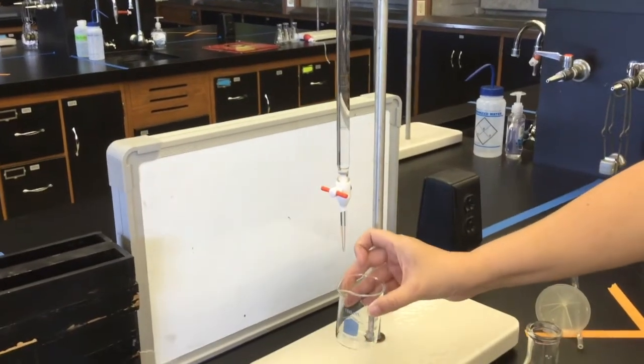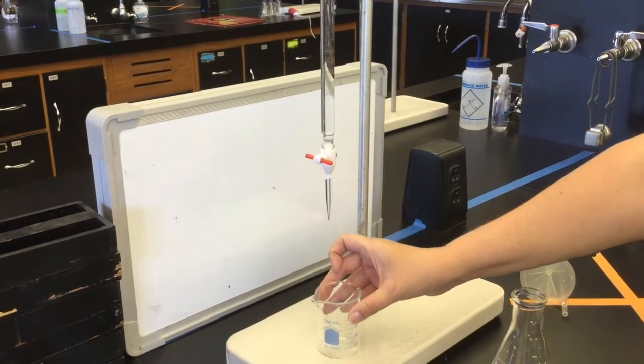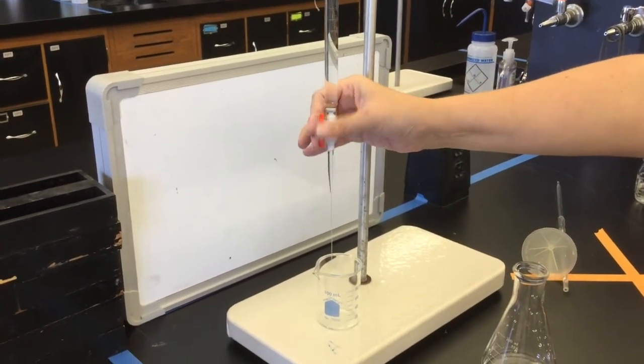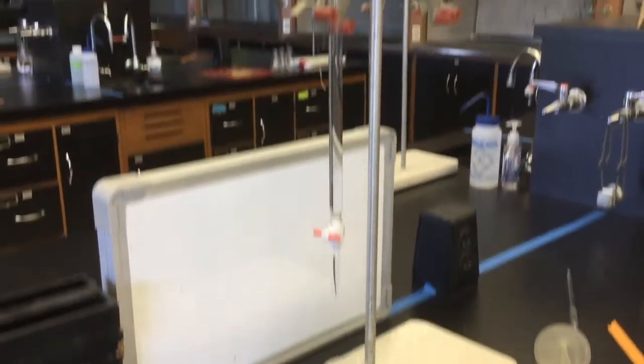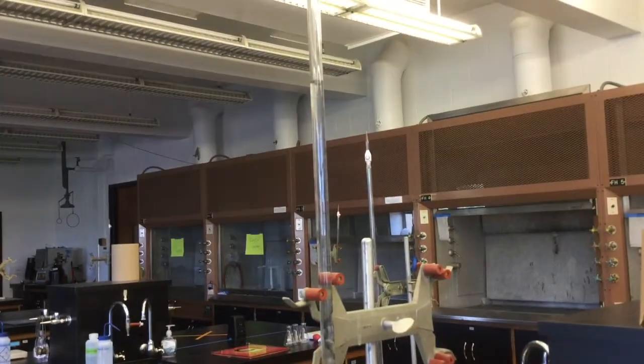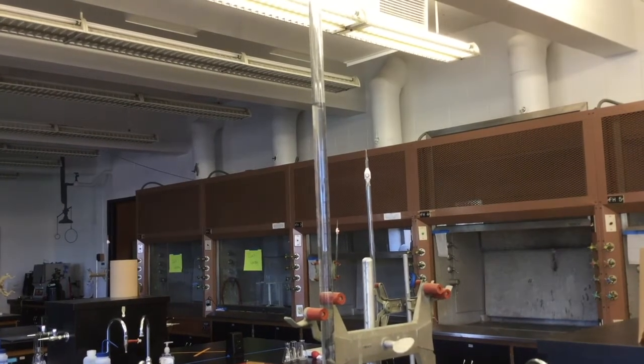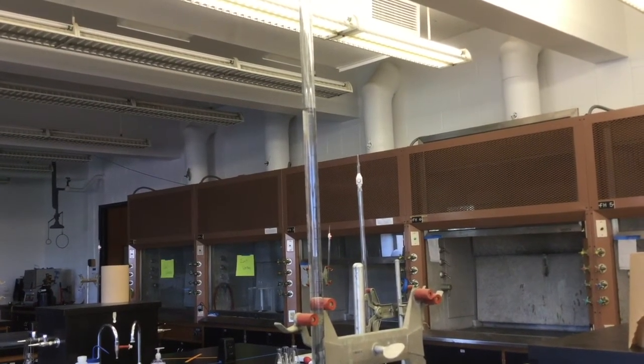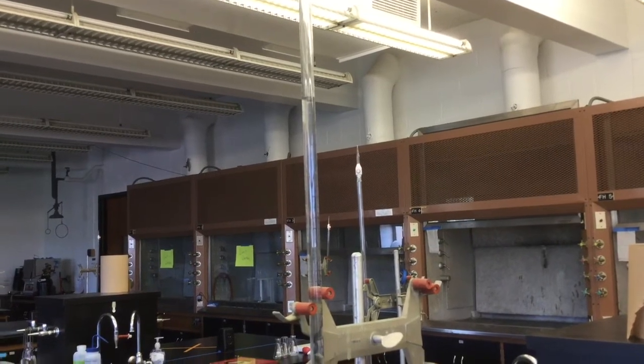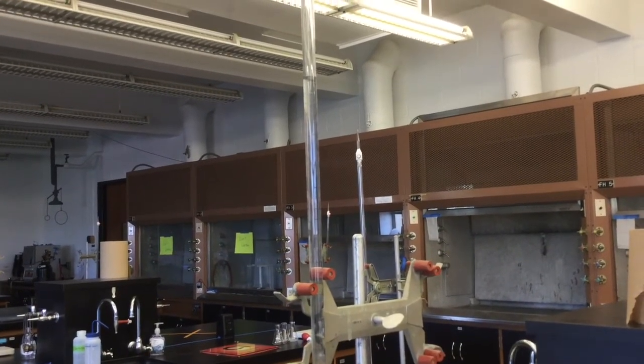Take one of the small beakers from your drawer, place it underneath the burette, and then open the valve for just a second to make sure all the bubbles come out. Check again to make sure that you're still above the 10 milliliter mark before you proceed. You only need to use a little bit of this sodium hydroxide in order to clear out the bubble. Make sure you don't do this into your flask.